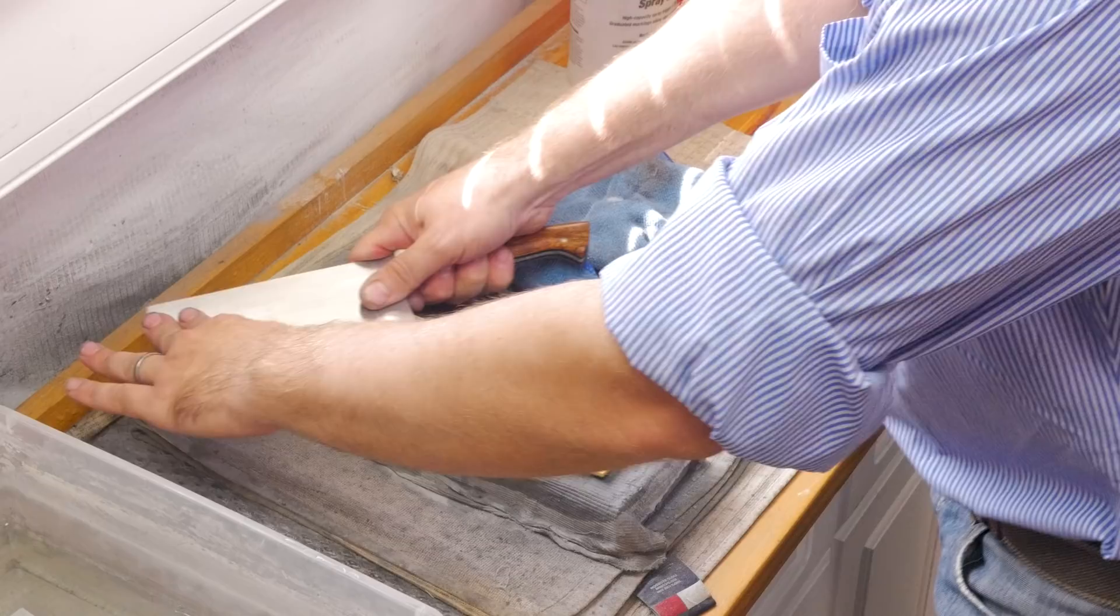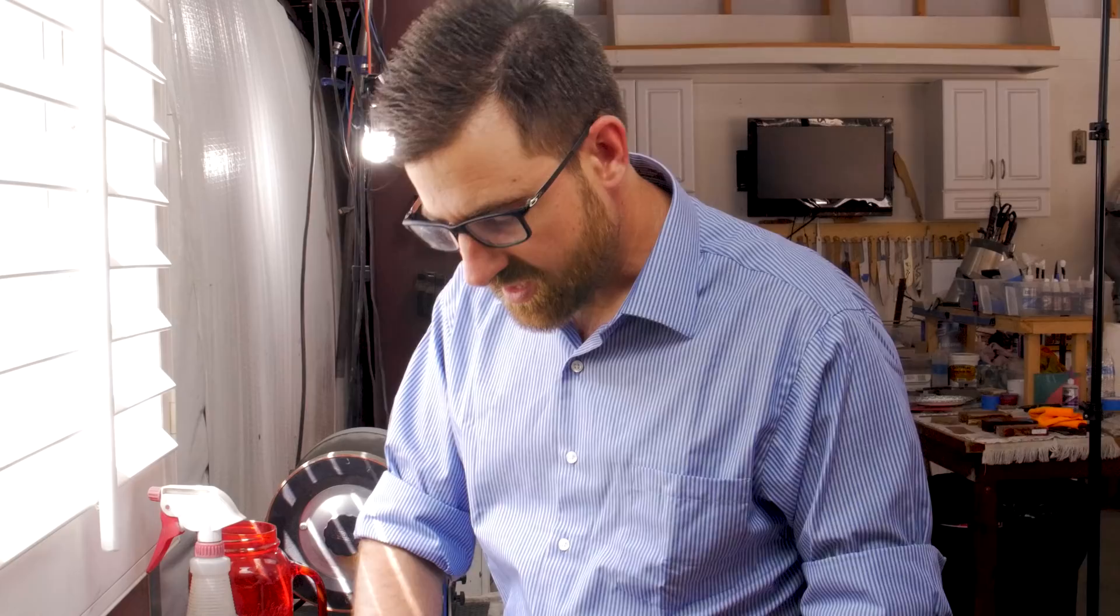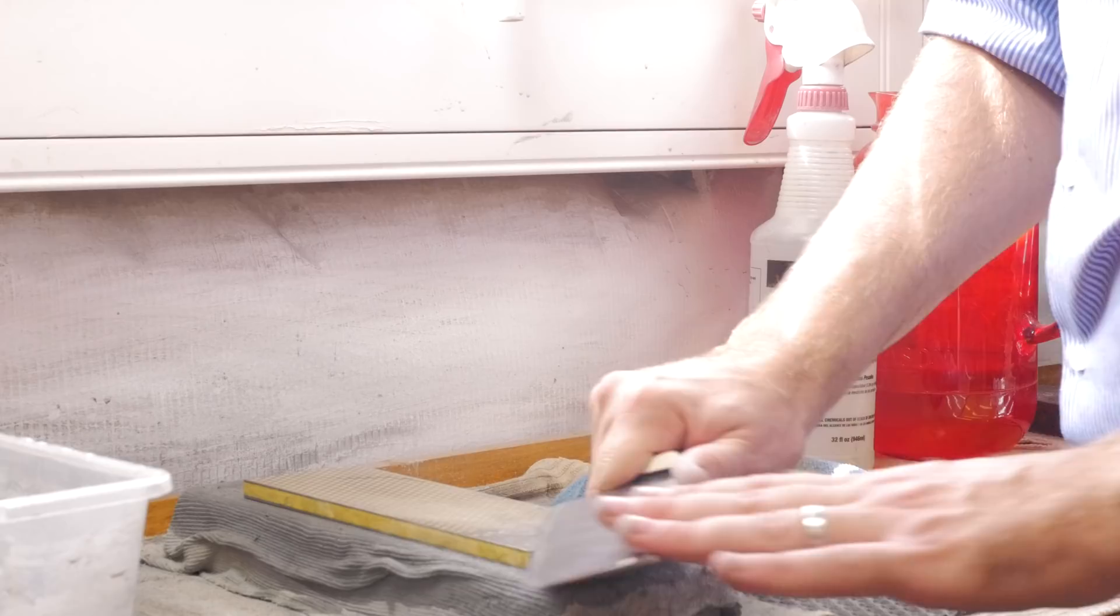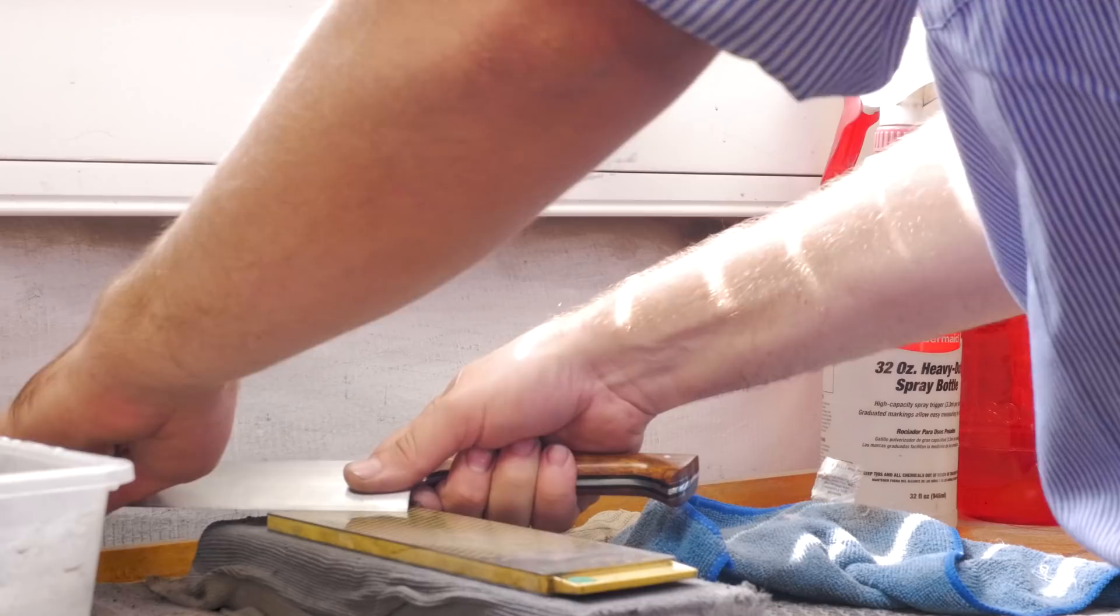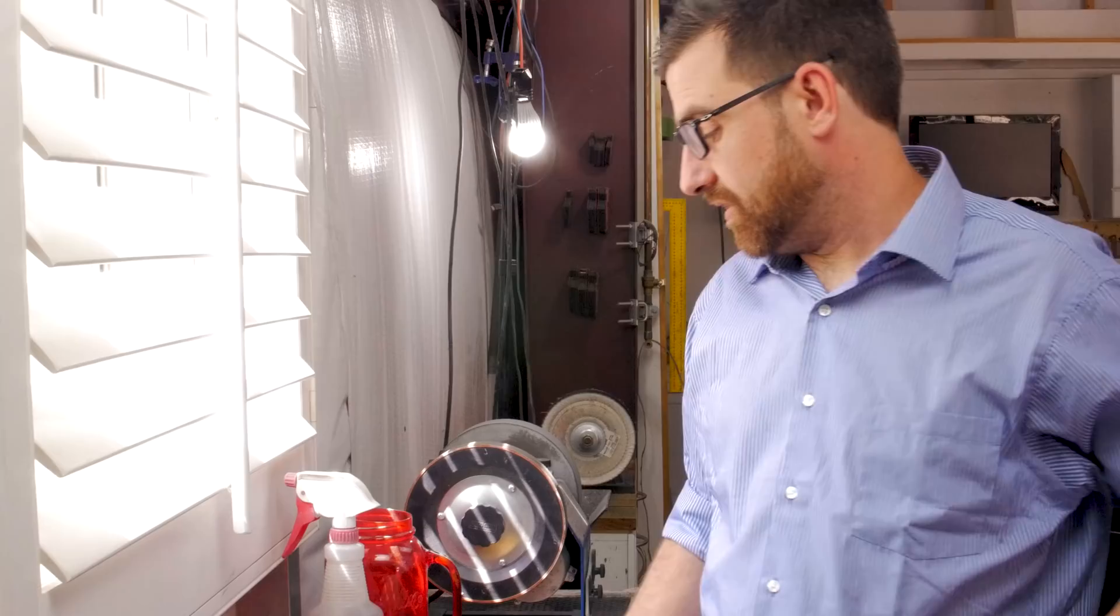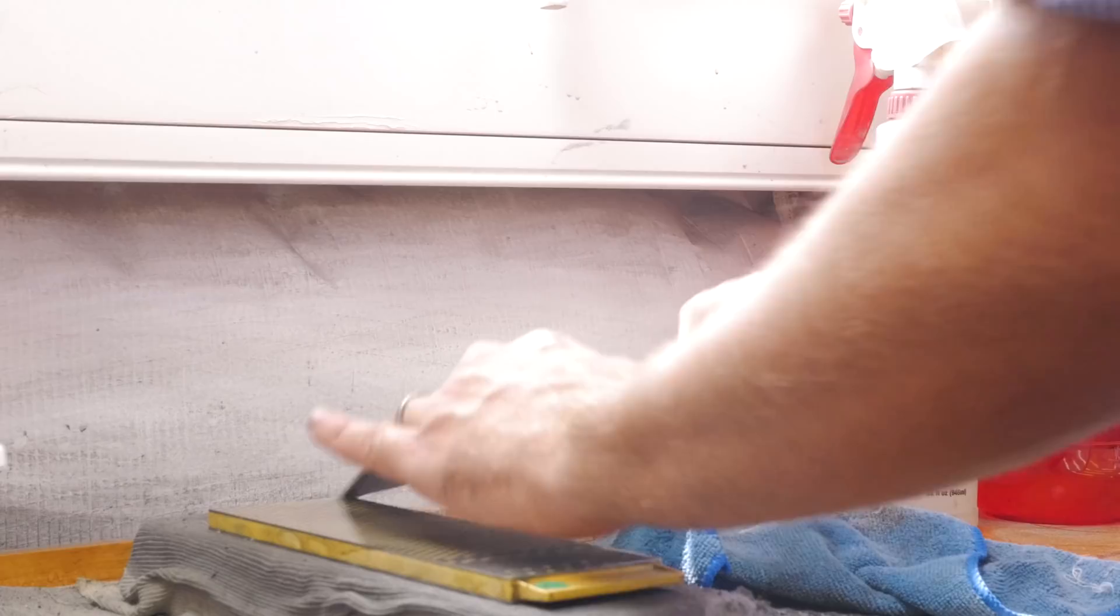So as I'm working it back and forth, I'm basically working that burr from side to side. And if you think of it as fatiguing the edge of the metal to where it actually is going to work and break itself off. At this point, it would probably be sharp enough to cut food, but we're going to go a little sharper. And really with sharpening, the more time you spend on it, the better the finish you get.